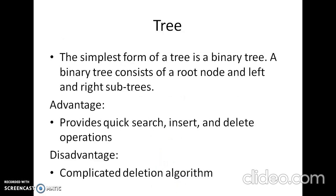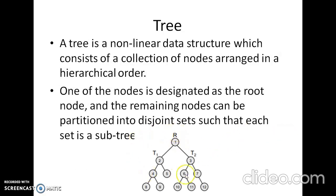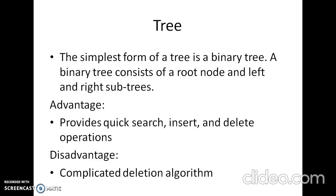The simplest form of tree is a binary tree. A binary tree consists of a root node, a left subtree, and a right subtree, where both subtrees are also binary trees. Each node contains a data element, a left pointer which points to the left subtree, and a right pointer which points to the right subtree. The advantage is it provides quick search, insert, and delete operations. The disadvantage is it involves a complicated deletion algorithm.